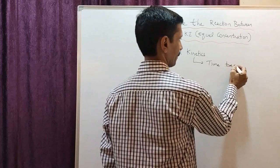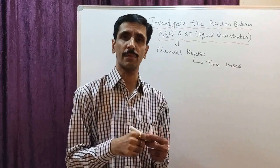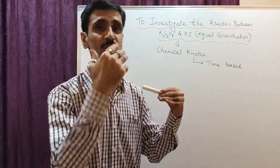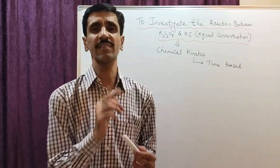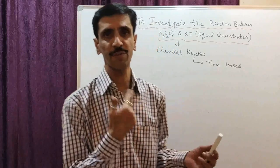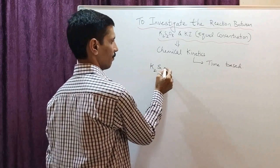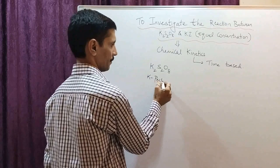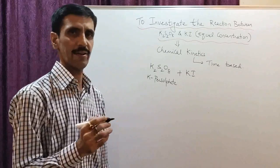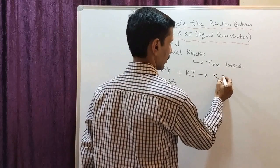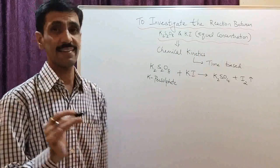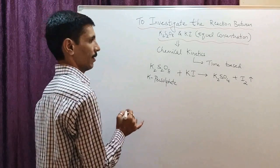Before I actually start with the procedure of this experiment, I would like to give you a theoretical background — what exactly happens in this reaction and how we are going to proceed. The reaction taking place is between K2S2O8 and KI. K2S2O8, potassium persulfate, reacts with potassium iodide to give potassium sulfate K2SO4 and iodine is liberated.